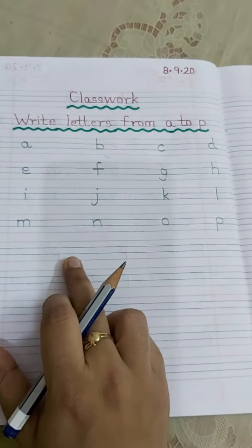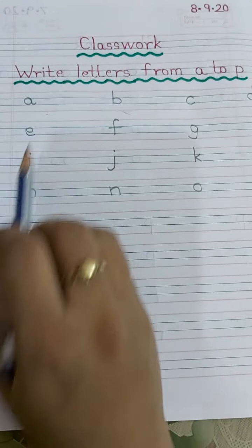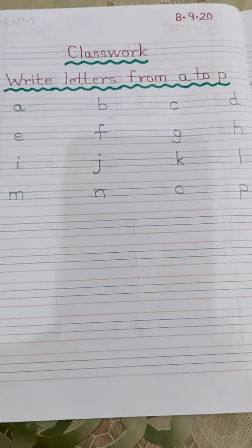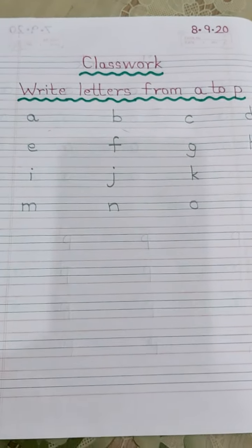Now, like this, you are going to complete your today's work. You have to write small letters from A to P. Now, repeat after me. Because you have to recognize it also. And you have to learn it also. How you have to write?